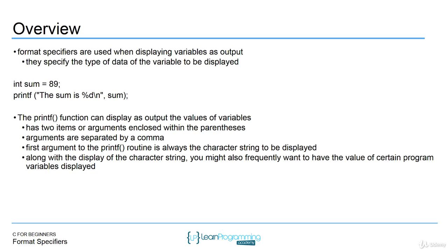We're using the printf function to display output, and we're telling it what to display based on what's inside the parentheses. Printf can display the output of variables. Up to this point, if we wanted to display something using printf, we just enclosed it in double quotes and saw text go to the screen. But when you want to print out a variable, you have to specify the type of the data for that variable. The printf function needs that information.